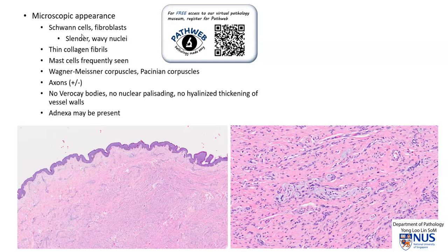Microscopically, neurofibromas are composed of Schwann cells as well as fibroblasts, and these are cells with slender, wavy nuclei. There are pink collagen fibrils in between the nuclei. Mast cells are frequently seen, as demonstrated earlier. Sometimes also Wagner-Meissner corpuscles as well as Pacinian corpuscles can be seen, and axons may be seen running through, especially highlighted by special stains.